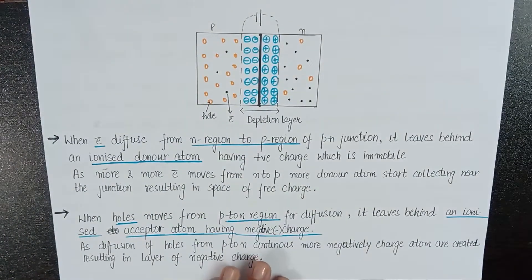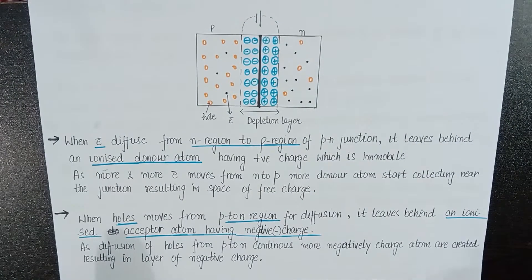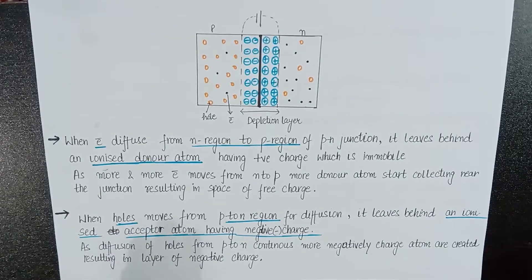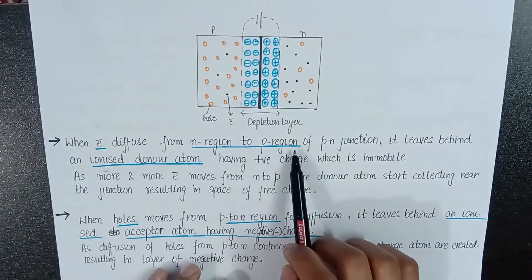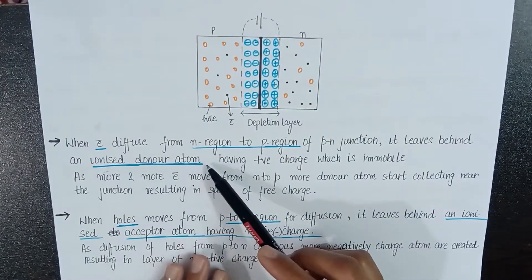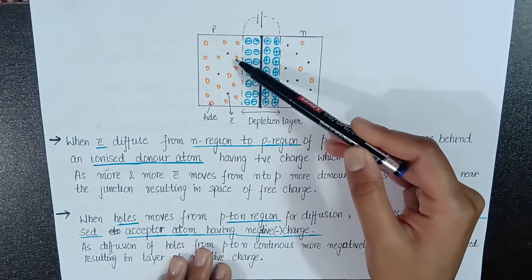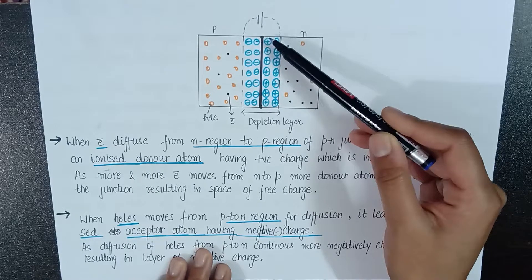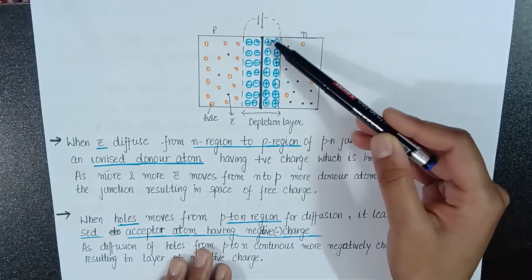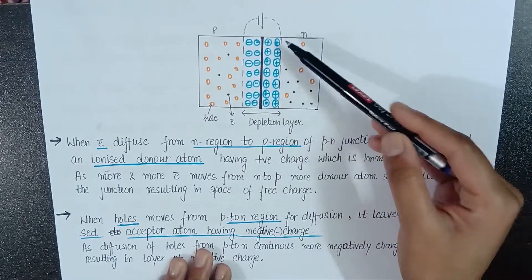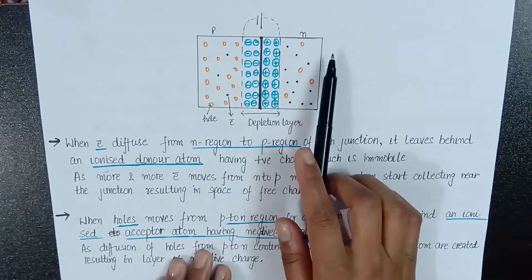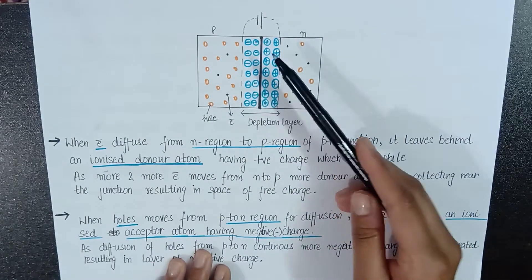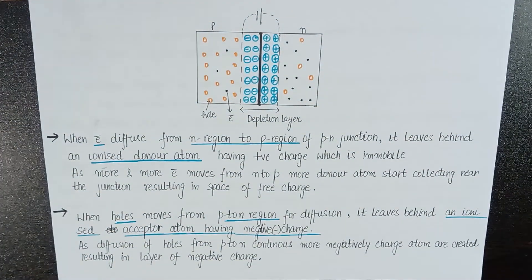When electrons diffuse from the N region to the P region, they leave behind ionized donor atoms in the N region, which carry a positive charge. These ionized atoms are immobile and form a positive charge layer on the N side. Similarly, when holes move from the P side, they leave behind ionized acceptor atoms carrying a negative charge on the P side. These two layers of immobile ions on either side of the junction form the depletion layer.